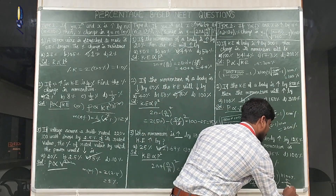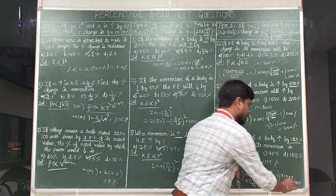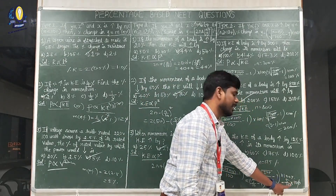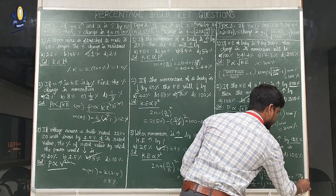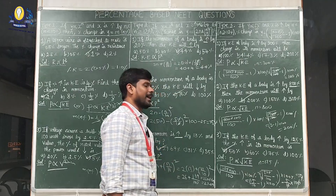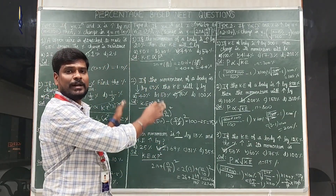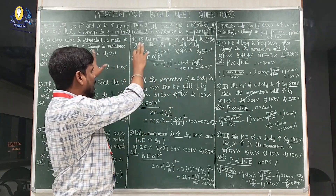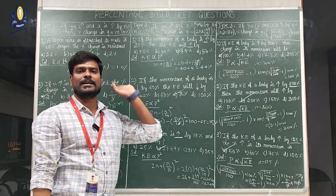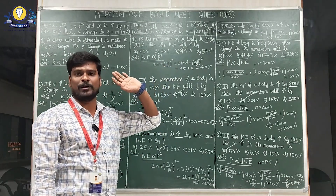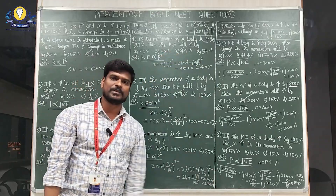Simplified: 5/10 × 100 = 50%. The final answer is 50%, so option A is the correct answer. This is a standard type of repeated NEET and JEE question. If you know the correct formula and concept, within 30 seconds you can crack all these questions. These are the most repeated types of percentage-based questions. Thank you.